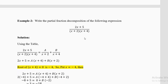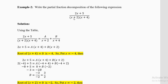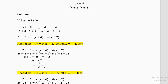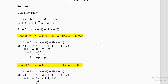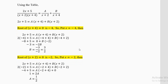Example 2: write the partial fraction decomposition of (2x + 5) / ((x + 2)(x + 4)). We have two non-repeating linear factors, so the structure is A/(x + 2) plus B/(x + 4). Multiplying both sides by (x + 2)(x + 4) gives: 2x + 5 = A(x + 4) + B(x + 2).